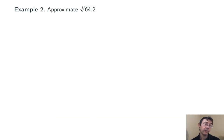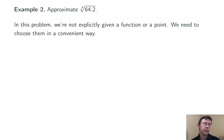Let's do one more example. Approximate the cube root of 64.2. So this problem doesn't explicitly give us a function to linearize, and it doesn't give us explicitly a point at which we should linearize it. So we have to choose those things in a convenient way.